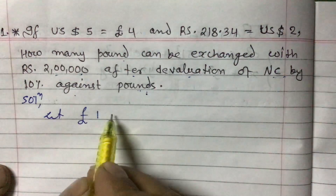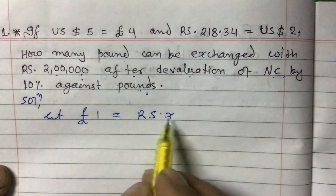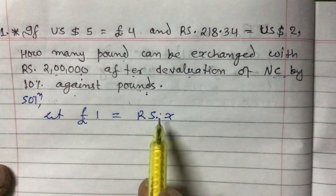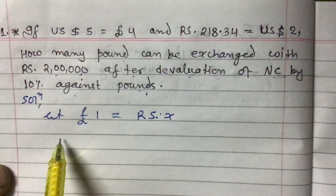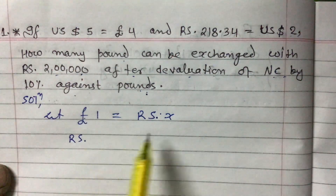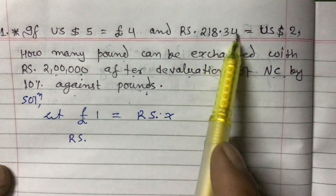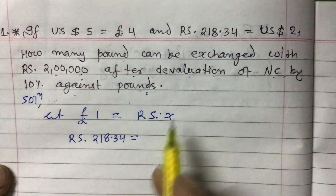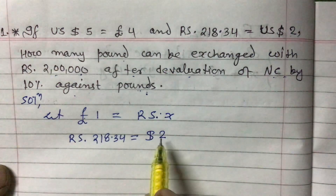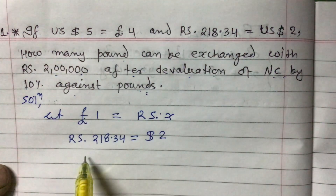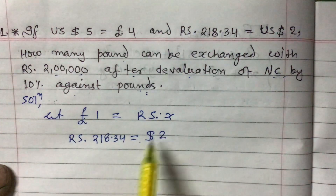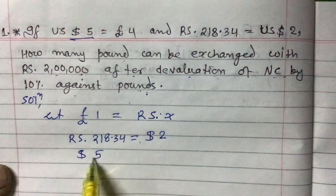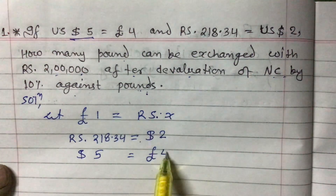Let pound 1 equal rupees x. We need rupees on the right side, so we search for rupees in the given data: rupees 218.34 equals US dollar 2. Now we have dollar on the right side, so we bring dollar to the left: dollar 5 equals pound 4.